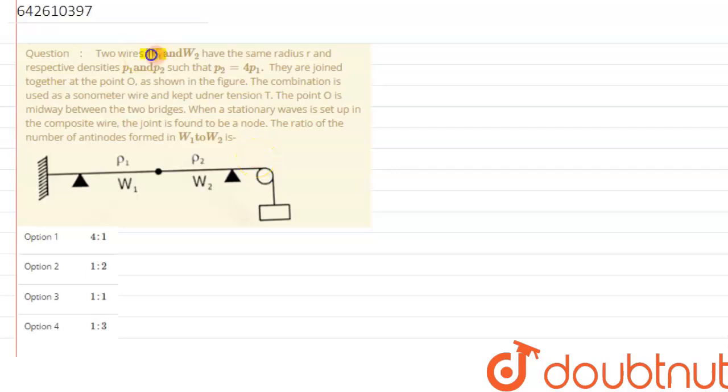There are two wires W1 and W2 having same radius r and respective densities rho 1 and rho 2. Here it is given as p1 and p2 such that p2 equals 4p1.